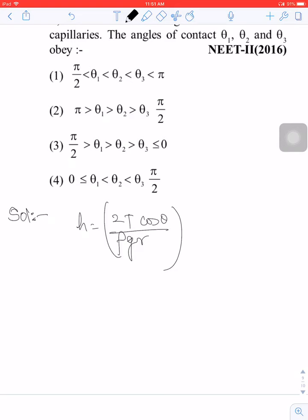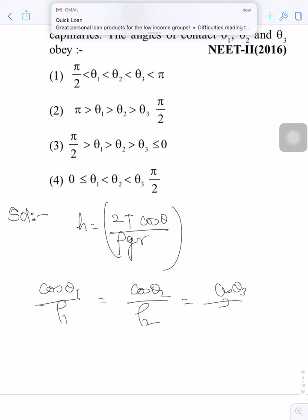Since heights are equal: cos theta 1 upon Rho 1 equals cos theta 2 upon Rho 2 equals cos theta 3 upon Rho 3.